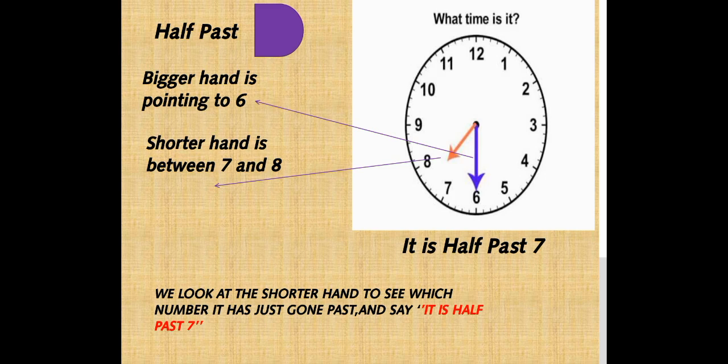Let me repeat it. If the bigger hand is pointing to 6 and the shorter hand is between 7 and 8, it is half past 7. So we look at the shorter hand to see which number it has just gone past and say it is half past 7.